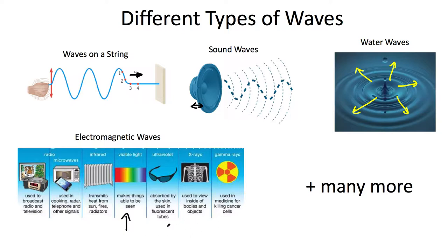The visible spectrum is also an example of electromagnetic waves and they are used in medicine as x-rays. You've also heard of ultraviolet electromagnetic radiation. There are many, many other types of waves, but these are some of the more common ones and the ones I'm going to focus on today.